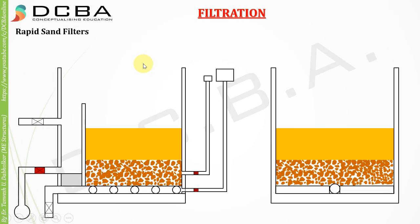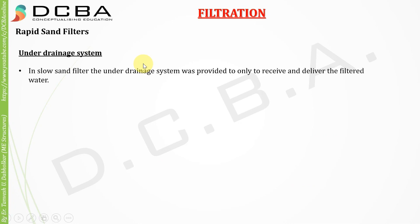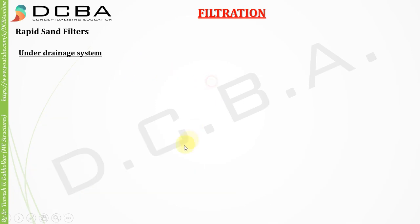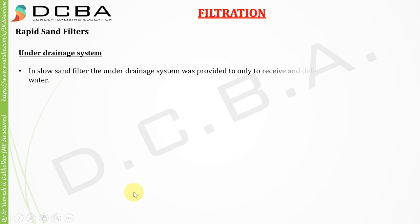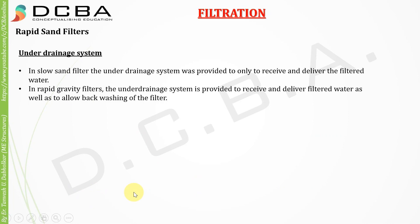Now comes a very important part of rapid sand filters — the under drainage system. In slow sand filters the under drainage system was provided only to receive the filtered water. But in rapid sand filters, apart from receiving the filtered water, the under drainage system is also required to give the backwash water. So backwashing of the filter is done from the under drainage system.